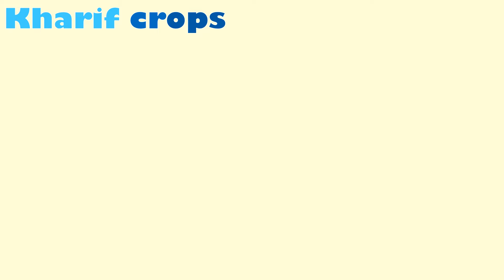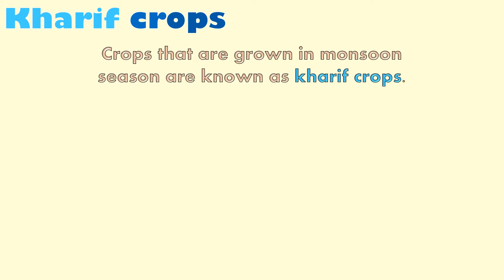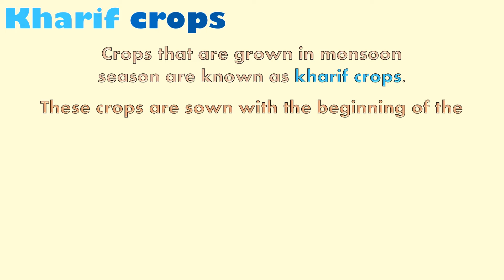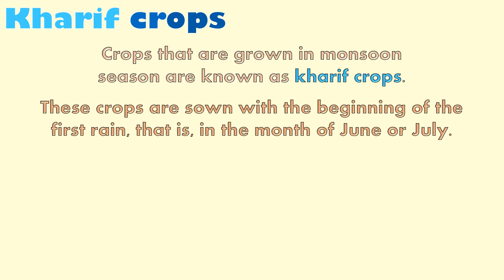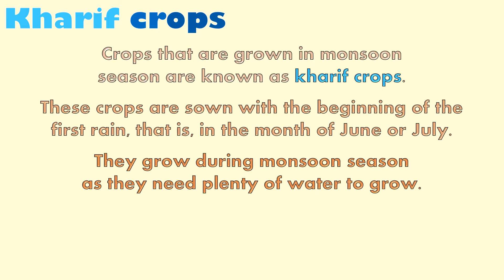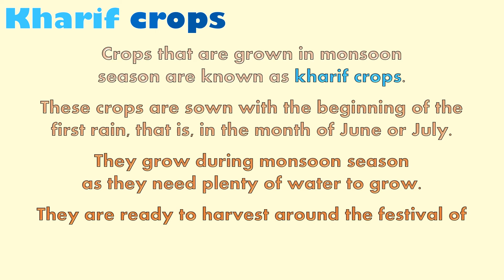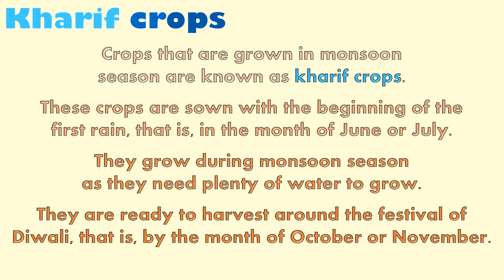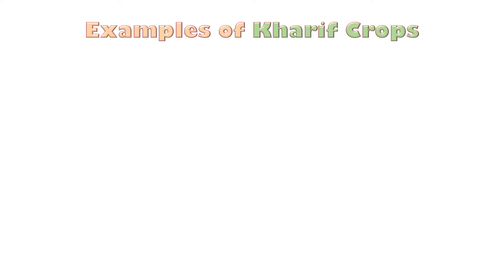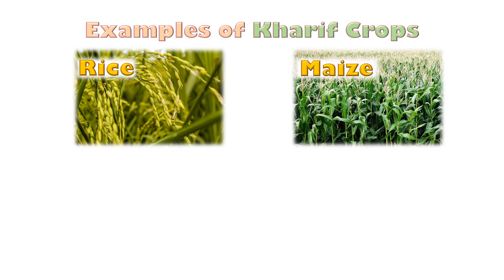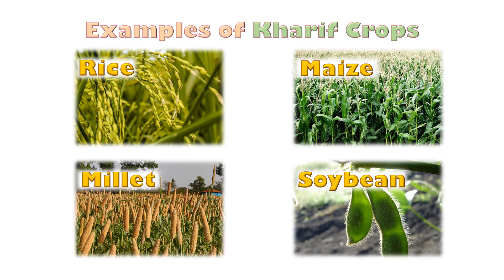Now, let us learn about Kharif crops. Crops that are grown in monsoon season are known as Kharif crops. These crops are sown with the beginning of the first rain, that is in the month of June or July. They grow during monsoon season as they need plenty of water to grow. They are ready to harvest around the festival of Diwali, that is by the month of October or November. Some examples of Kharif crops are rice, maize, millet, and soybean.